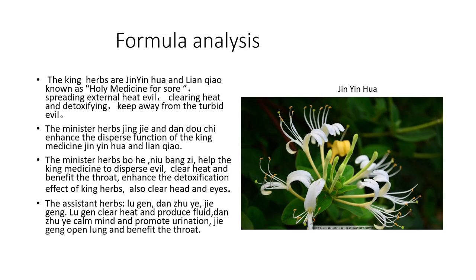Formula analysis. The king herbs are Jin Yinhua and Lianqiao — both holy medicines for the throat. First, they are light and ascending in nature, and can spread external heat evil. Second, they are good at clearing heat and detoxification. Third, Jin Yinhua and Lianqiao are aromatic herbs that can keep away turbid evil.